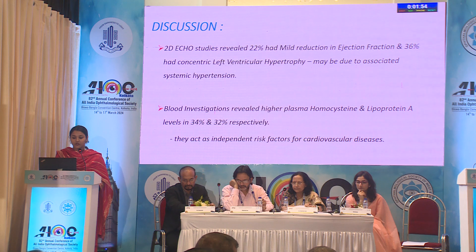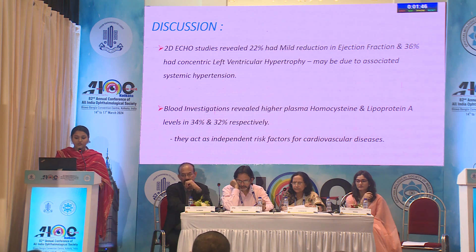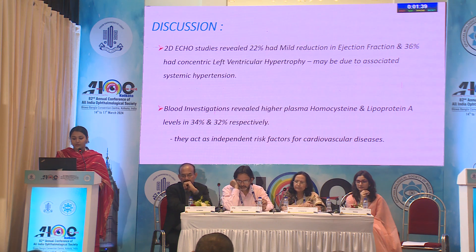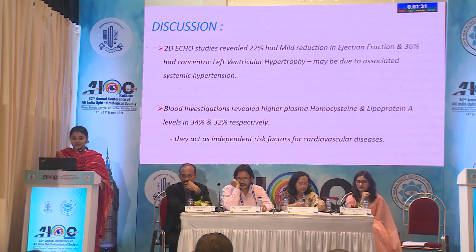2D echo studies revealed 22% had mild reduction in ejection fraction and 36% had concentric left ventricular hypertrophy, which may be due to associated systemic hypertension. Blood investigations revealed higher plasma homocysteine levels and lipoprotein A levels in 34% and 32% of patients respectively. These act as independent risk factors for cardiovascular disease.